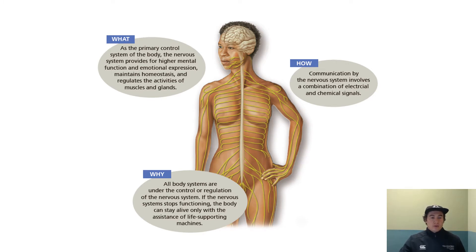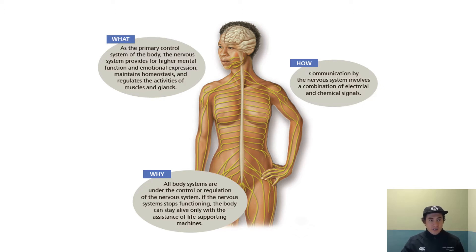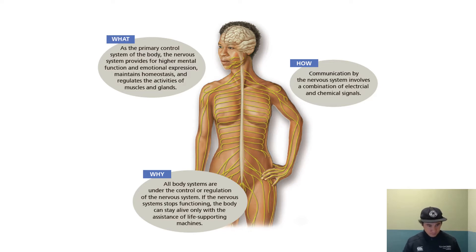The nervous system is the primary control system of the body. It even overrides your other communication system, which is your endocrine system. It provides us higher mental function, emotional expression, and is a big part of maintaining homeostasis and regulating activities — things like muscle contractions and production of hormones from glands. The nervous system does this through a combination of electrical and chemical signals, and all body systems are under this control or regulation.